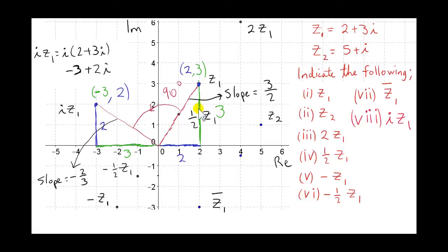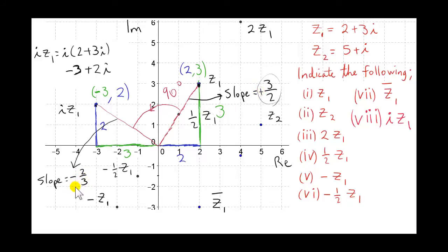Comparing to coordinate geometry, the slope of the line from the origin to z1 is rise over run, which is 3 over 2. When we multiply z1 by i, the new line to the origin has slope minus two-thirds — we invert 3 over 2 to get 2 over 3 and change the sign. The key thing to remember: multiplying a complex number by i rotates it anti-clockwise about the origin by 90 degrees.